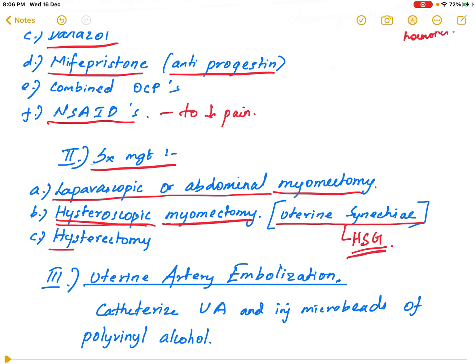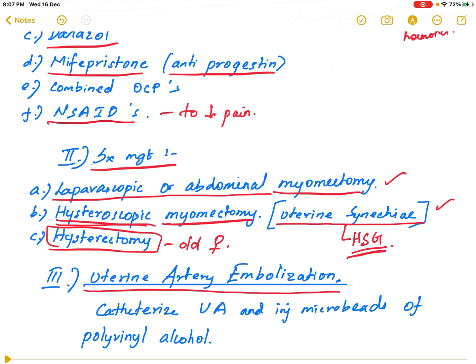Hysterectomy is mostly performed in older females, while myomectomy is preferred in younger females. Uterine artery embolization (UAE) involves catheterizing the uterine artery and injecting microbeads of polyvinyl alcohol to selectively occlude circulation to the fibroid.